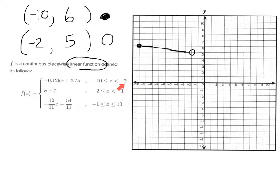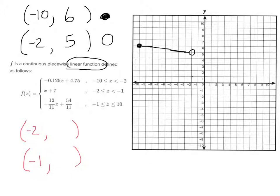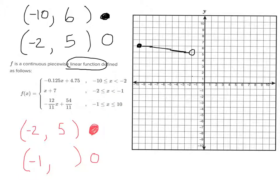Now I need to plug negative 2 and negative 1 into the second function. When you plug negative 2 in, that's negative 2 plus 7, which equals 5. There's an equal sign next to the negative 2, so this is a closed circle. When I plug negative 1 in, it's not equal, so it'll be an open circle. At negative 1, I get 6 out — go left 1 and up 6 — and I draw a line between the two.